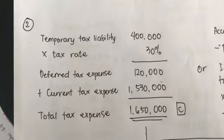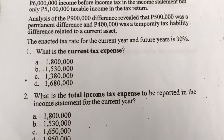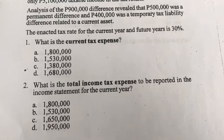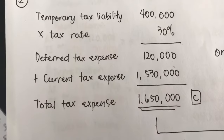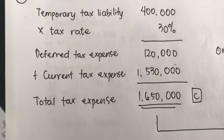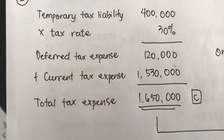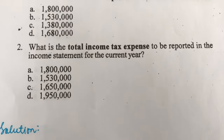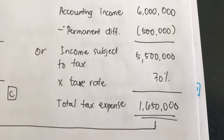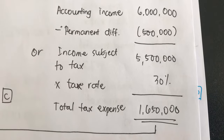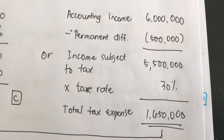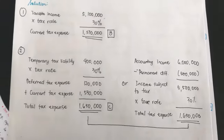For total income tax expense in Problem 1: the temporary difference of 400,000 × 30% = 120,000 deferred tax expense. Add current tax expense of 1,530,000 to get total tax expense of 1,650,000 — answer is letter C. Alternatively, accounting income of 6,000,000 minus permanent difference of 500,000 = income subject to tax of 5,500,000 × 30% = 1,650,000 total tax expense directly.